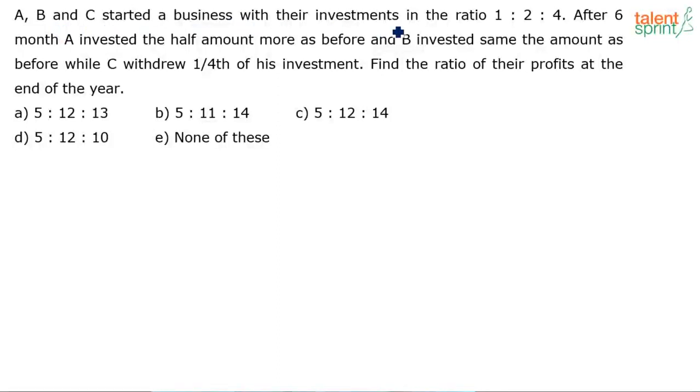A, B and C started a business with their investments in the ratio 1:2:4. After six months, A invested half the amount more as before and B invested same amount as before. While C withdrew one-fourth of his investment. Find the ratio of their profits at the end of the year.